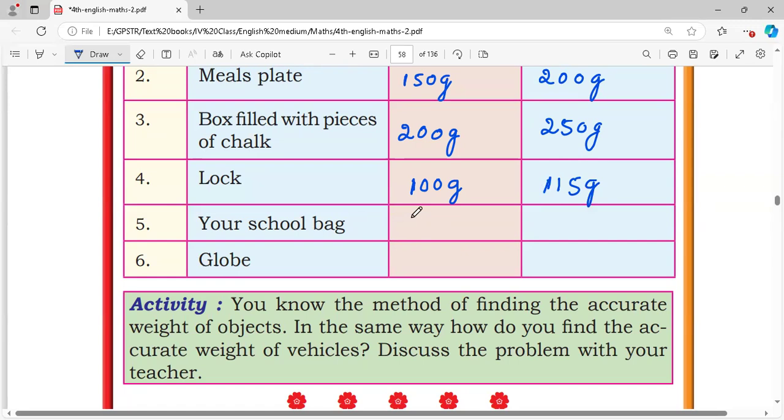Your school bag. School bag. Government made a rule, school bag must be less than 10 kg. That's why this is 7 kg. Accurate weight is 6 kg 500 grams.